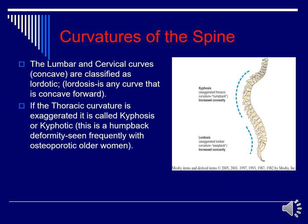Here is a diagram of those curves. The lumbar and cervical are concave, classified as lordotic — lordosis is any curve that is concave forward. The thoracic curvature, when exaggerated, is called kyphosis or kyphotic, which presents as a humpback deformity frequently seen in elderly Caucasian females who have susceptibility to osteoporosis.